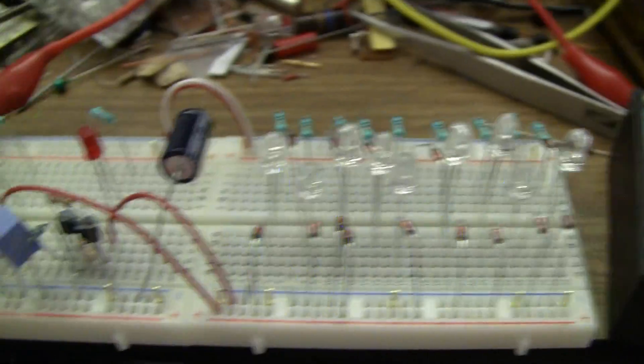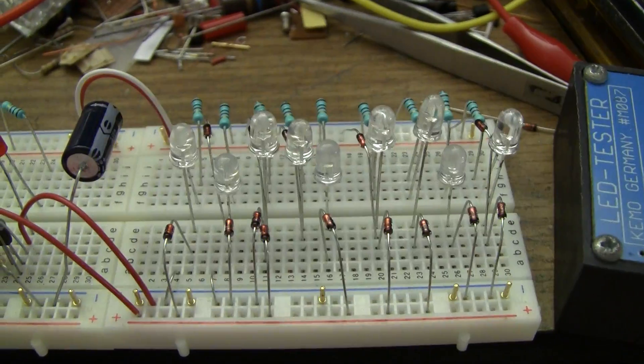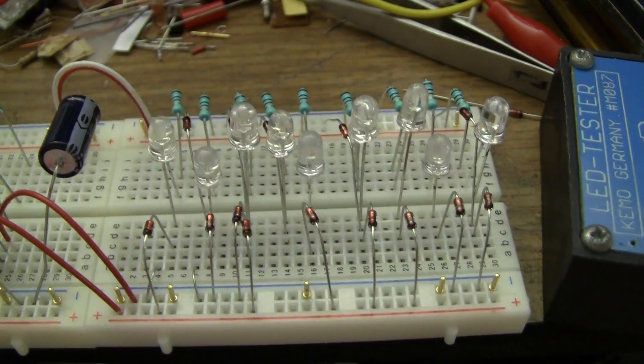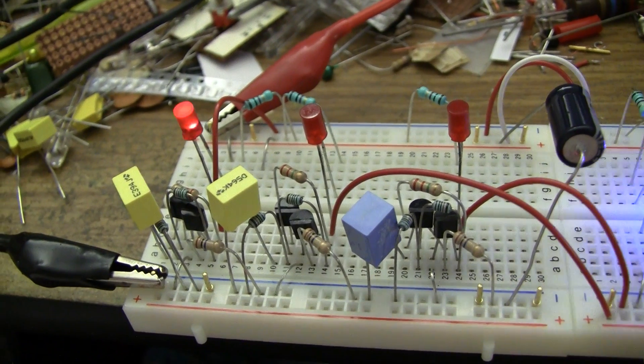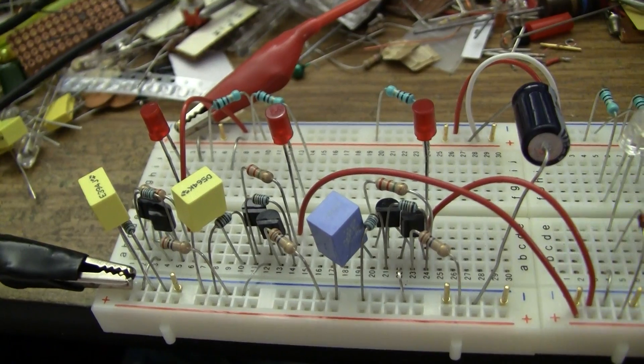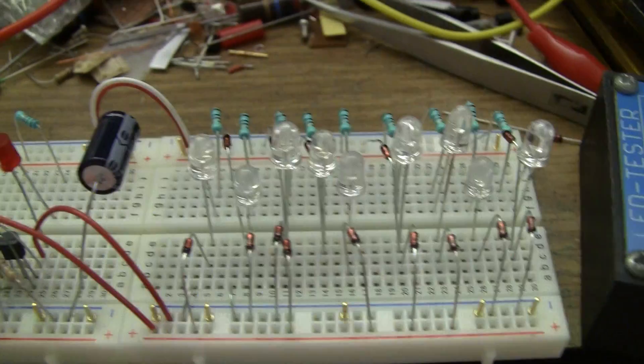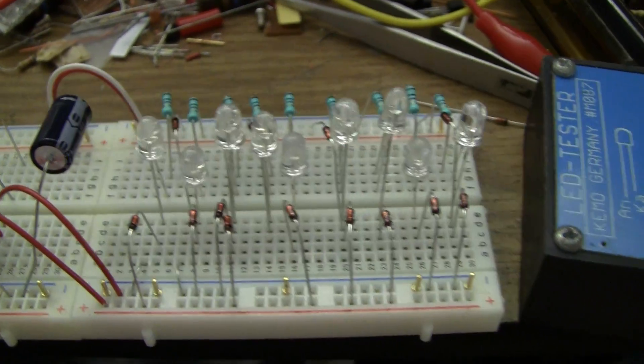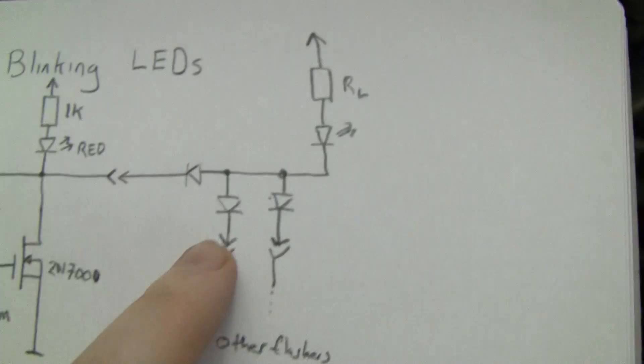Now what I've done to isolate the oscillators a little bit from the loads is I've put a whole bunch of steering diodes in. So each LED is connected to up to three of the oscillators and when the oscillators allow the load to have some current the LED will be steered through these diodes as we see here.